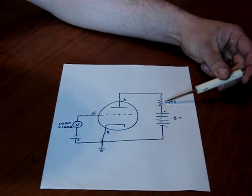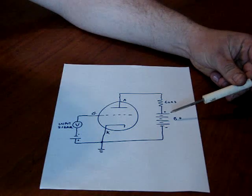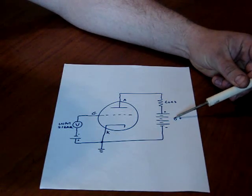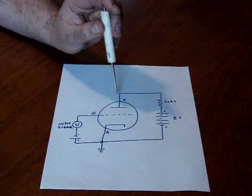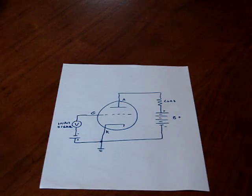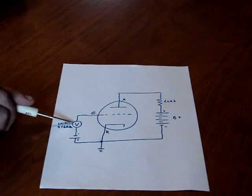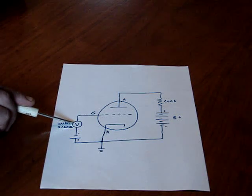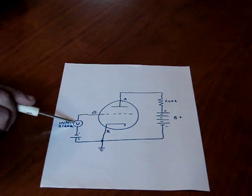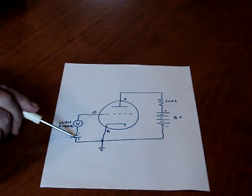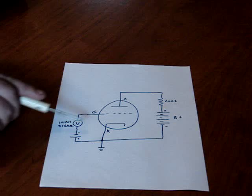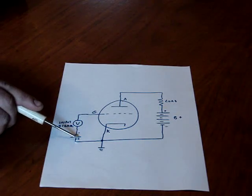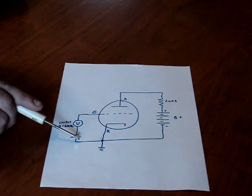You have your load, which we'll say is a speaker. And you have your high voltage B plus, say is a hundred volts. That's to the plate, the anode. And your input signal, which is your microphone or your CD player or whatever, also has a power supply. We'll say this is 10 volts.